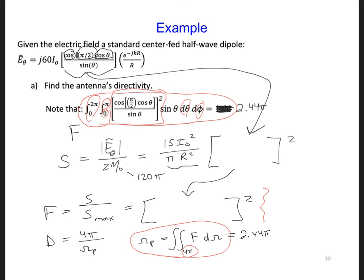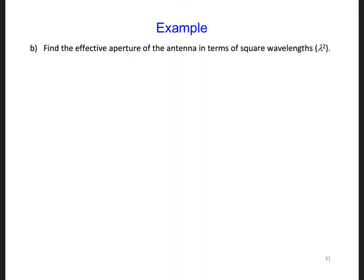So that means the directivity is 4 pi over 2.44 pi, and that will be equal to 1.64. Next, find the effective aperture or area of the antenna in terms of square wavelengths.